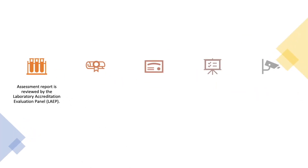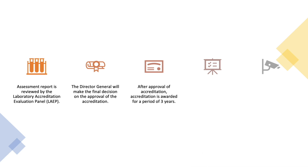After sending the assessment report, it will be deliberated by the Laboratory Accreditation Evaluation Panel, who will make a recommendation to the Director General. The Director General of Standards Malaysia makes the final decision on approval of accreditation. After approval, accreditation is awarded to the laboratory for a period of three years. During that period, accredited bodies will perform internal audits at least once every 12 months, though frequency may be reduced if the laboratory continues to show competence.